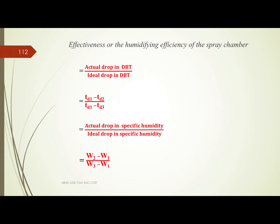The humidifying efficiency and effectiveness is the actual drop in dry bulb temperature divided by the ideal drop: (Td1 - Td2) / (Td1 - Td3). It can also be expressed as the actual increase in specific humidity divided by the ideal increase: (W2 - W1) / (W3 - W1).